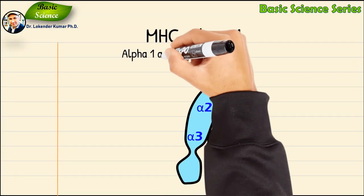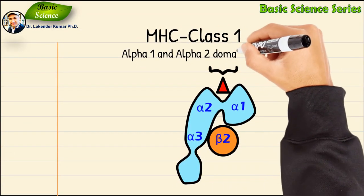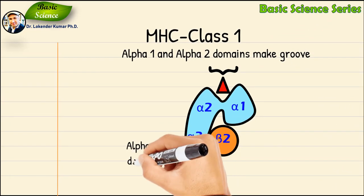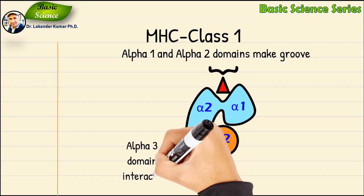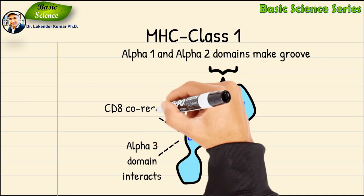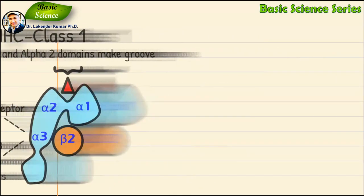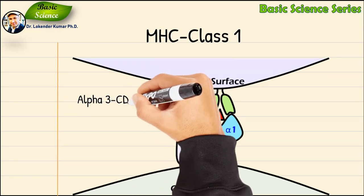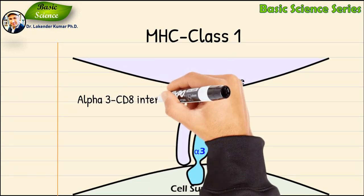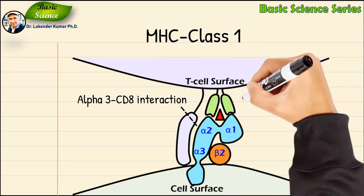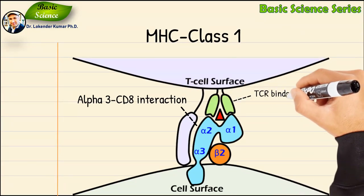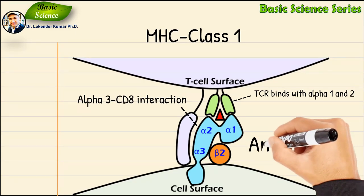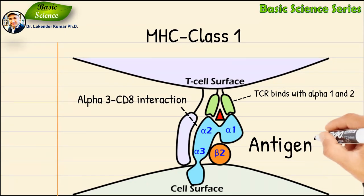The alpha 1 and alpha 2 domains fold to make up a groove for peptides to bind. It is very important to note that the alpha 3 domain interacts with the CD8 co-receptor. This alpha 3–CD8 interaction holds the MHC class 1 molecule in place while the T cell receptor on the surface of cytotoxic T cells binds with the alpha 1 and alpha 2 chains and checks the coupled peptide for its antigenicity.